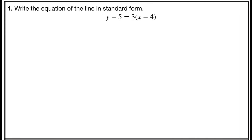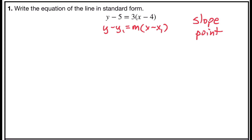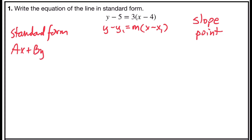Problem number one asks you to write the equation of the line in standard form. This is given to you in point-slope form, which is y minus y-sub-1 equals slope times x minus x-sub-1. Standard form is ax plus by equals c, where a, b, and c are all integers, a is larger than zero — so a has to be positive, and you don't want any fractions or decimals as your coefficients a, b, and your constant c.